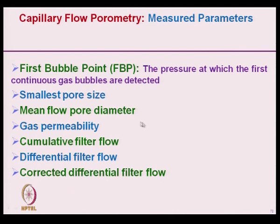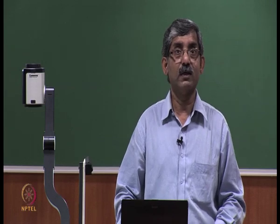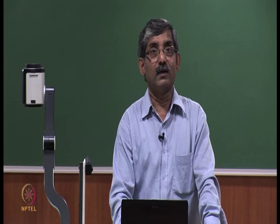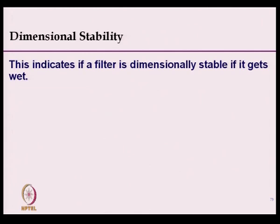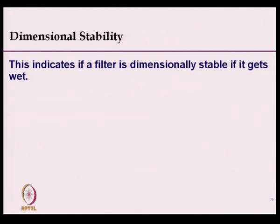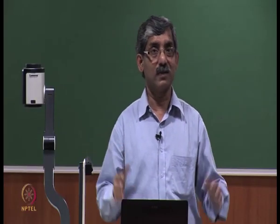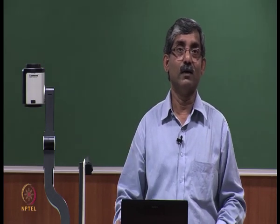Parameters measured by capillary flow porometry include: FBP — first bubble point, the pressure at which the first continuous bubble is formed, from which the largest pore size is calculated; mean flow pore diameter; gas permeability; cumulative filter flow; differential filter flow; and corrected differential filter flow. Another physical parameter is dimensional stability — when the filter gets wet its dimensions change, and accordingly dimensional stability can be calculated.